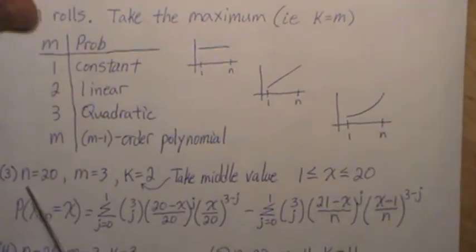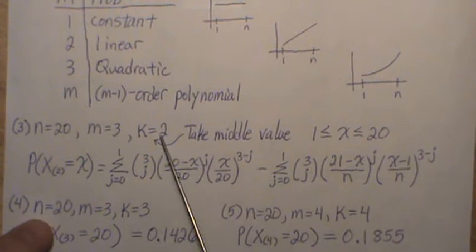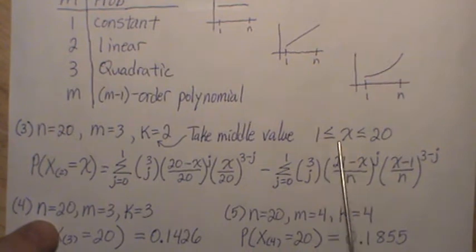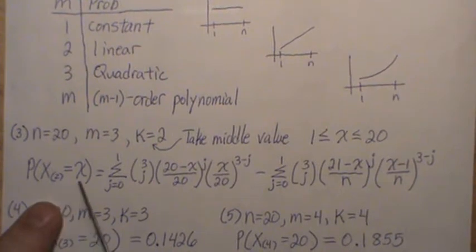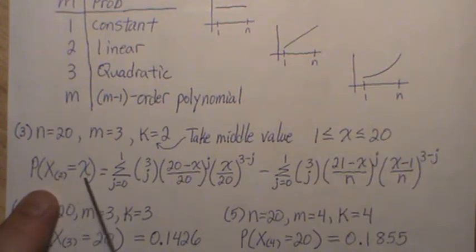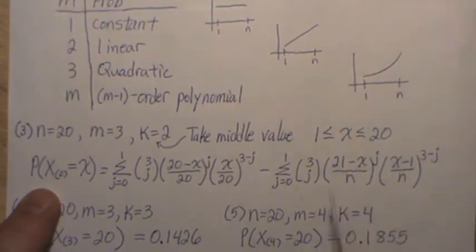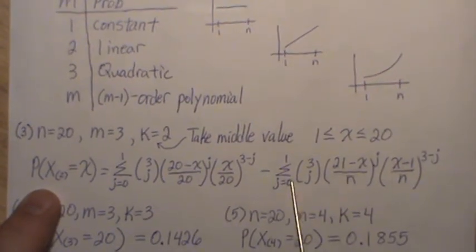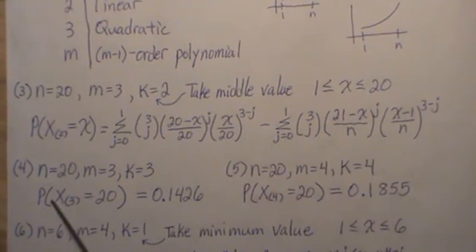So the third example is n equals 20, m equals 3. So we're going to roll it 3 times, k equals 2, so that's the middle value. Remember, the values that x can take on are 1 to 20. So the probability that the middle value is x, the probability that it's 1, or that it's 2, that it's 20, and you'd put that number in this formula here. And you do this sum from 0 to 1 minus this sum from 0 to 1. And that's it, whatever it is, that's the results.